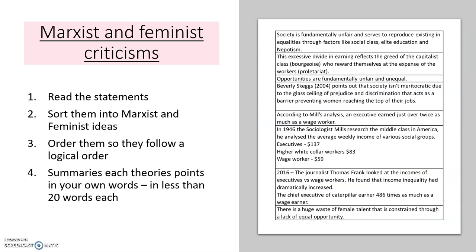Your activity for today can be done in a number of different ways. If we were in the room, you'd have a sheet on the right-hand side of the screen and I'd get you to cut them out and order them into Marxist ideas and feminist ideas. You can do this in several ways if you don't have access to a printer at home — you could bullet point the key ideas that you think are Marxist on one side and feminist on another, highlight on the sheet if you can print it out, or copy and paste using the sheet on the PowerPoint in the shared area.